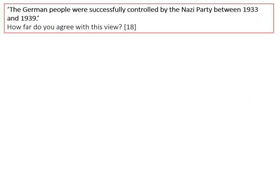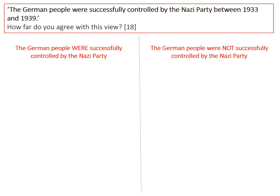With an essay question, just like any essay question at GCSE, you always need to think about what the two sides of the argument are. The two sides here are quite simple. On the one hand, we want to argue that the German people were successfully controlled by the Nazi party. On the other hand, we're going to look at the counter-argument that the German people were not successfully controlled. I'd pause the video here, copy this essay plan, and see if you can come up with any evidence for either side yourself before you watch on.